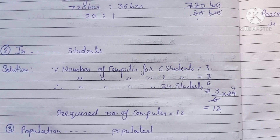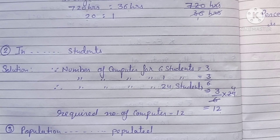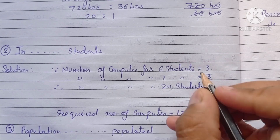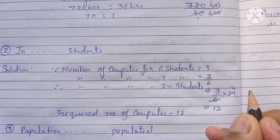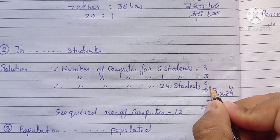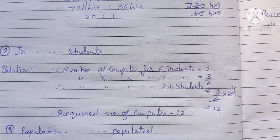This is the unitary method. For example, suppose Mohan eats 6 chocolates in 3 days — for 24 chocolates we use 3 by 6 multiplied by 24. This is the unitary method. Now question number 3.